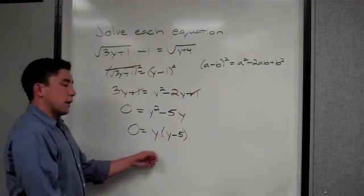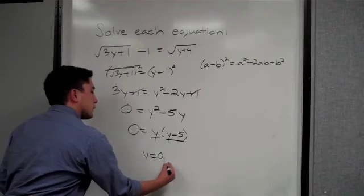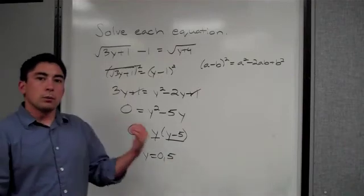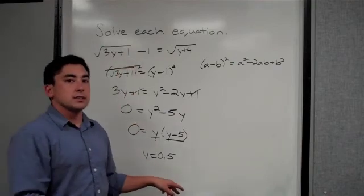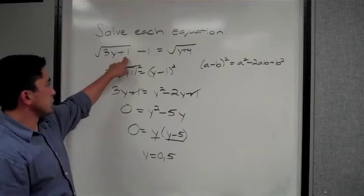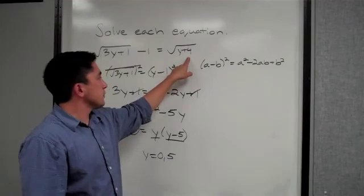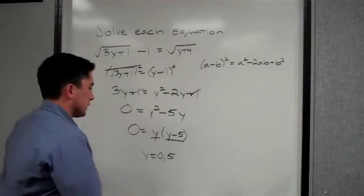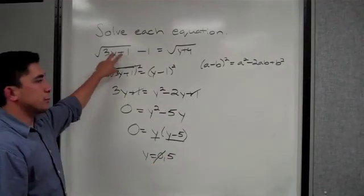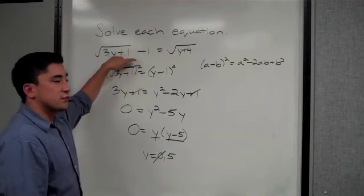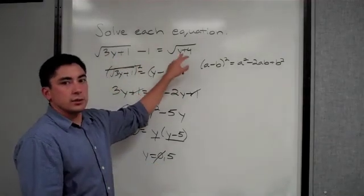Factor out a y: 0 equals y(y − 5). So y equals 0 or y equals 5. But with problems like this, always go back and plug both values into the original equation to check. Plugging in 0: √(0+1) − 1 = 0, but √(0+4) = 2; 0 does not equal 2, so y = 0 is not valid. Plugging in 5: √(15+1) − 1 = √16 − 1 = 4 − 1 = 3, and √(5+4) = √9 = 3; 3 equals 3, so y = 5 is our answer.